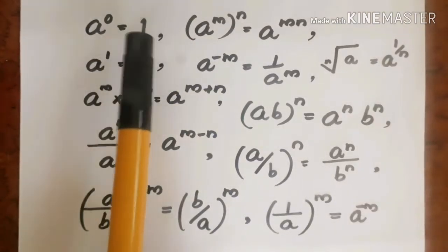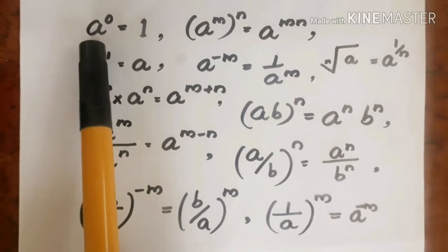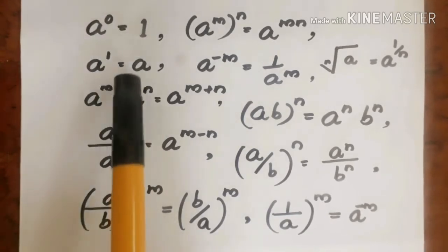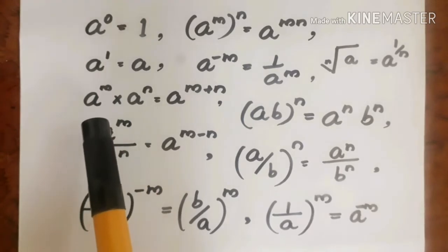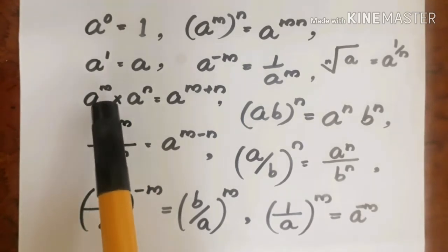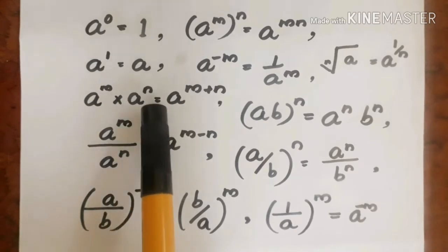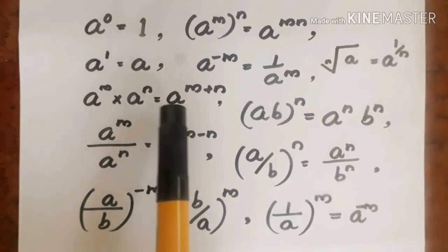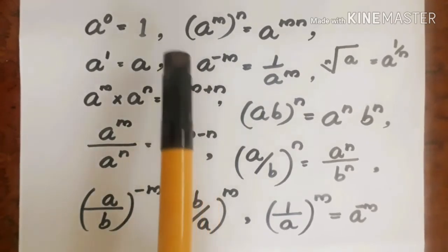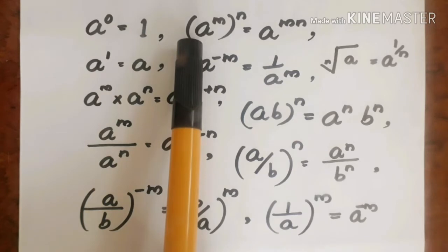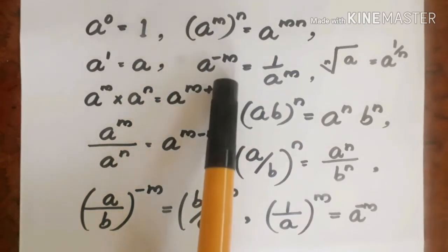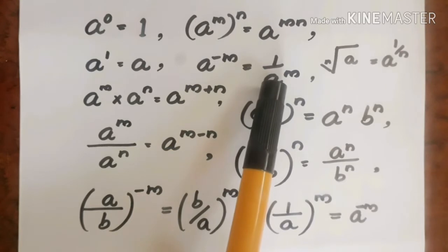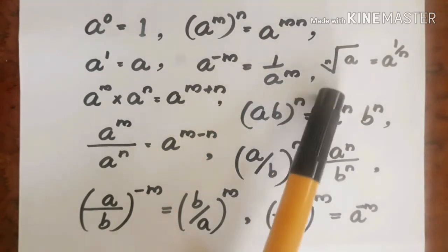The exponent rules are: a^0 is equal to 1. a^1 is equal to a. a^m times a^n is equal to a^(m+n). a^(-m) is equal to 1 by a^m.